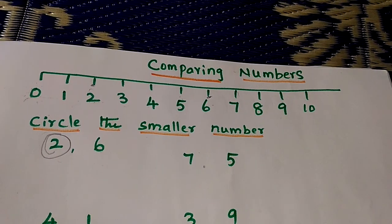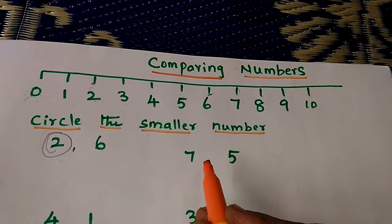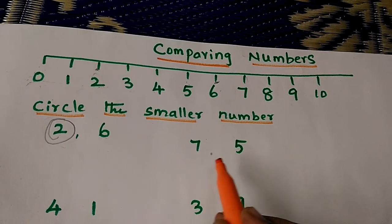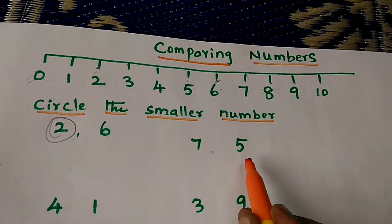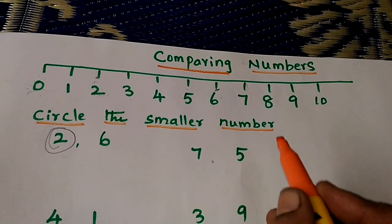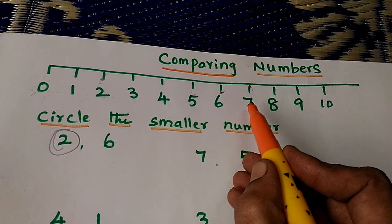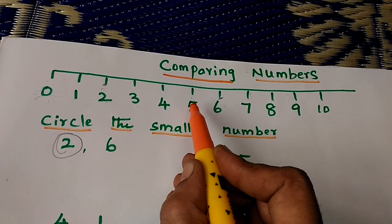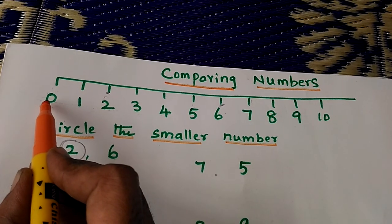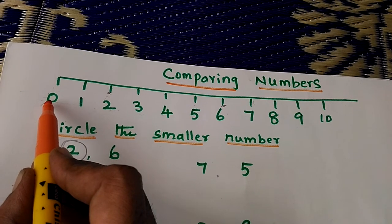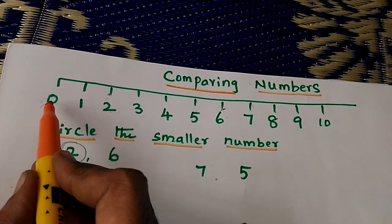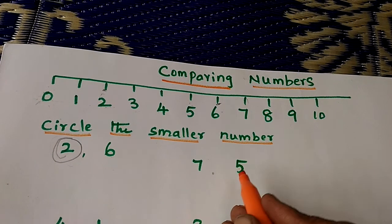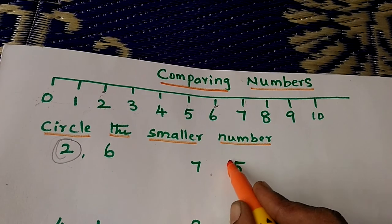One more example. We have 7 and 5. Which one is the smaller number — 7 or 5? Where is 7? Here. Where is 5? Here. 5 is closer to 0, so 5 is smaller than 7. Circle the smaller number.